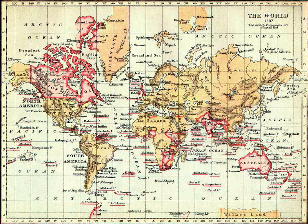From 1870 the Dominion included two vast neighbouring British territories that did not have any form of self-government: Rupert's Land and the North-Western Territory, parts of which later became the provinces of Manitoba, Saskatchewan, Alberta, and the separate territories — the North-West Territories, Yukon and Nunavut. In 1871, the Crown Colony of British Columbia became a Canadian province; Prince Edward Island joined in 1873 and Newfoundland in 1949.